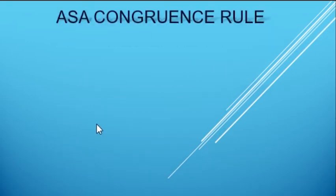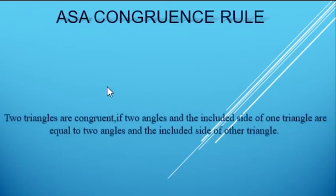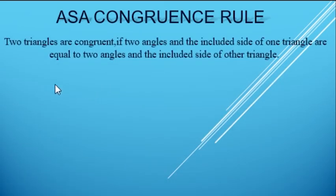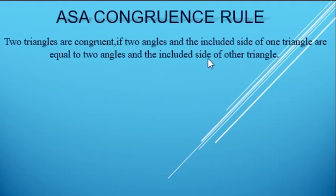Next, we have the second rule: Angle Side Angle congruence rule. We can say the 2 triangles are congruent if 2 angles and the included side of 1 triangle are equal to 2 angles and the included side of the other triangle.